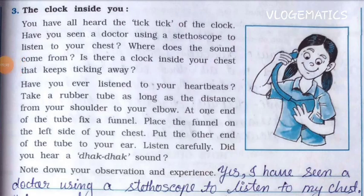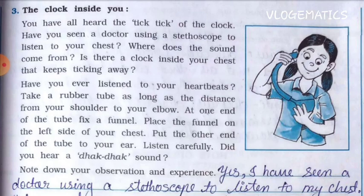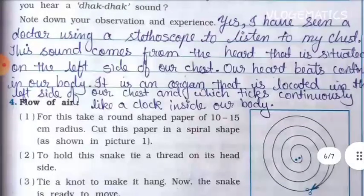Have you heard the tick-tick of a clock? Have you seen a doctor using a stethoscope to listen to your chest? Take a rubber tube as long as the distance from your shoulder to your elbow. Fix a funnel at one end, place the funnel on the left side of your chest, and put the other end of the tube to your ear. Listen carefully — did you hear a dhak dhak dhak sound?